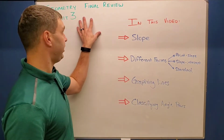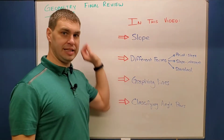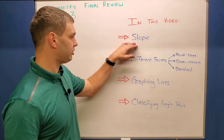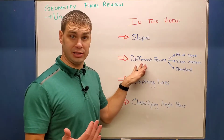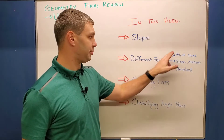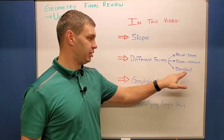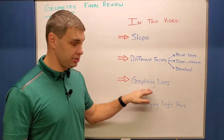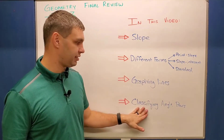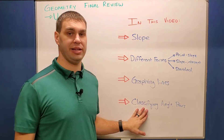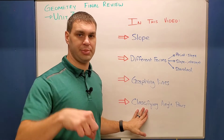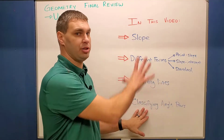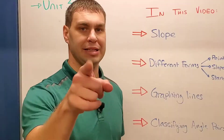We're doing some more review for our first semester final in geometry. In this video we're talking about slope, our different types of equation forms — point-slope, slope-intercept, and standard form — as well as graphing a few lines and then classifying some angle pairs. In the video player below you can drag the bar to whichever parts you need, but let's get into it.